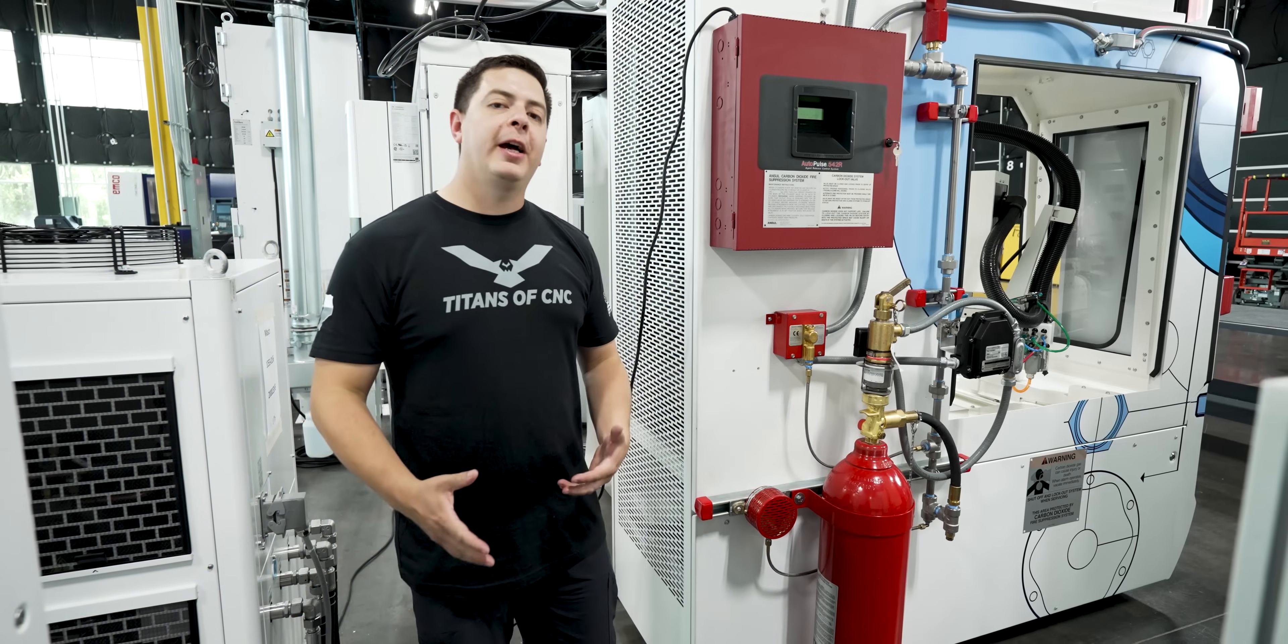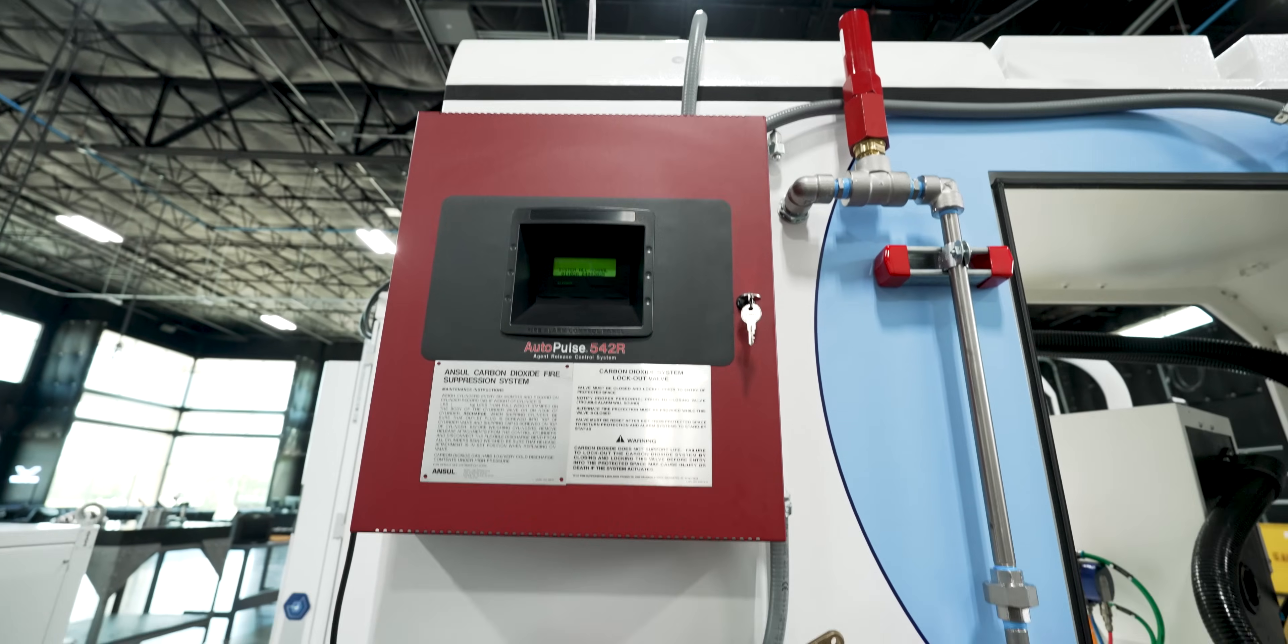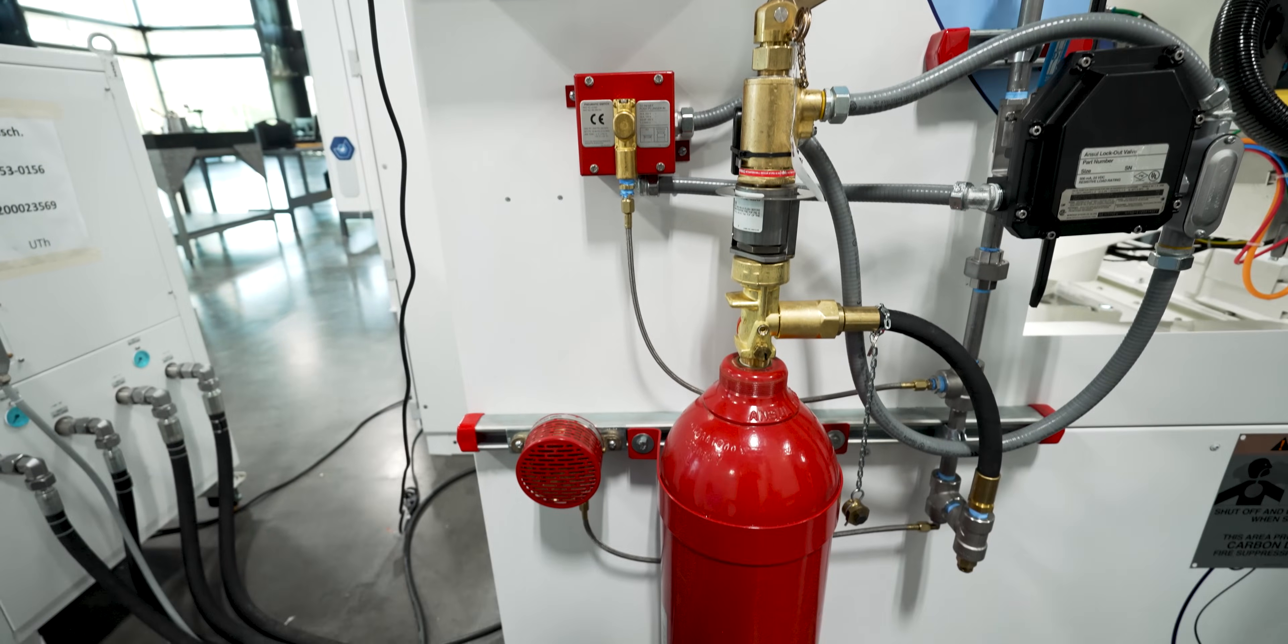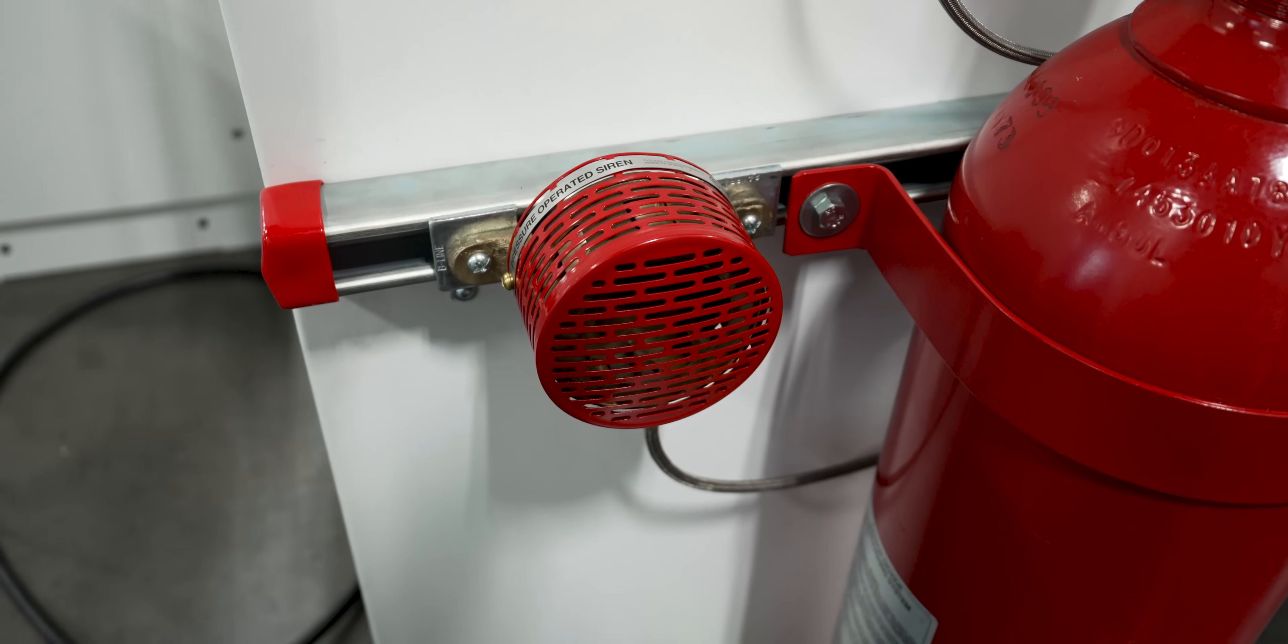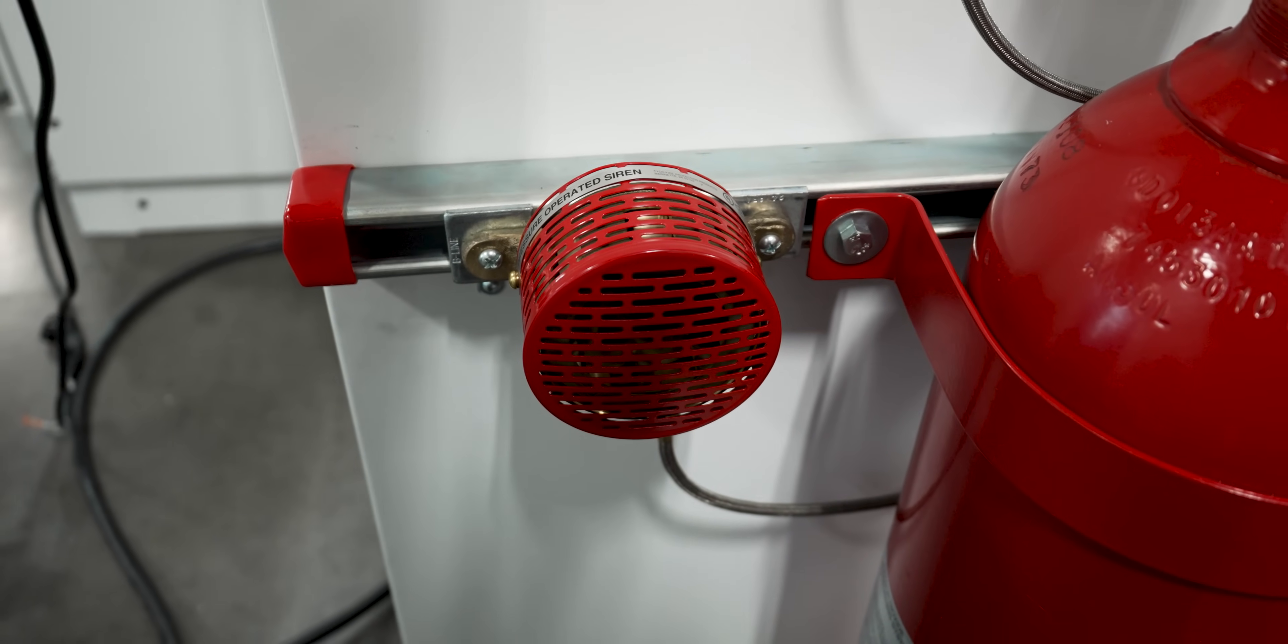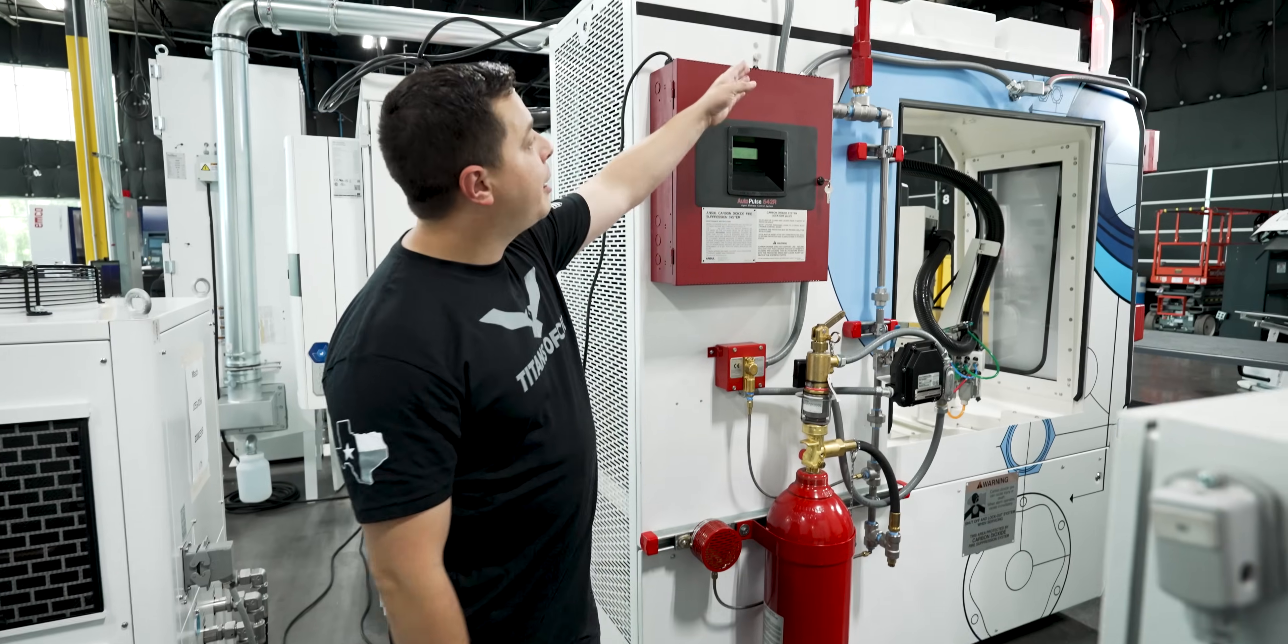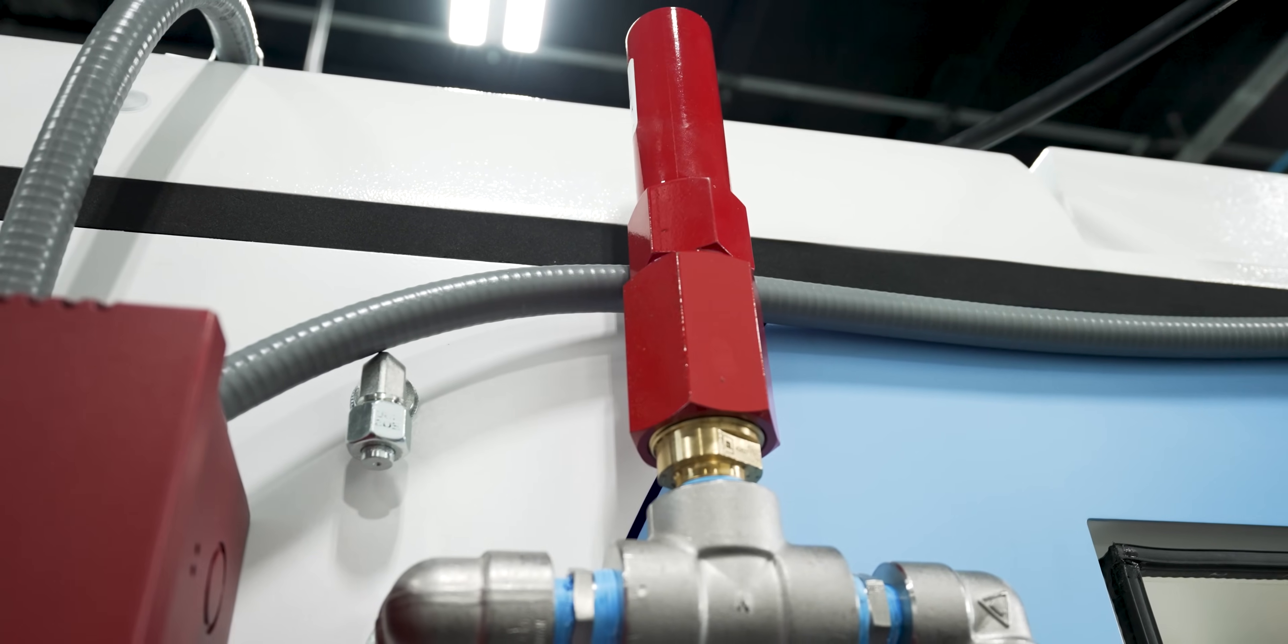So now on the right side of the machine we have our fire suppression unit. Now since we're grinding with oil we're going to be using a carbon dioxide suppression unit because you cannot put out an oil fire using water. So that's why we're using carbon dioxide. We've got our siren that's going to be an audible siren that'll let you know that something's going wrong and it's extinguishing those flames. On the top you have your oxidizer that's going to make the carbon dioxide smell wintery fresh.